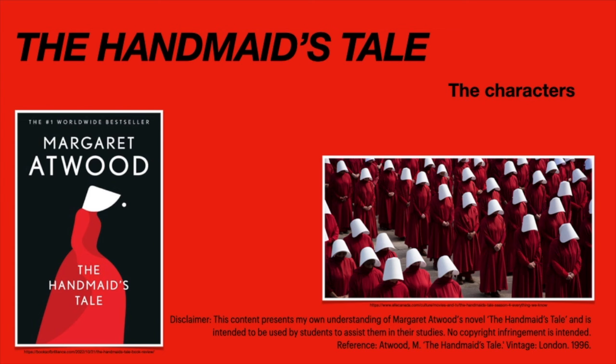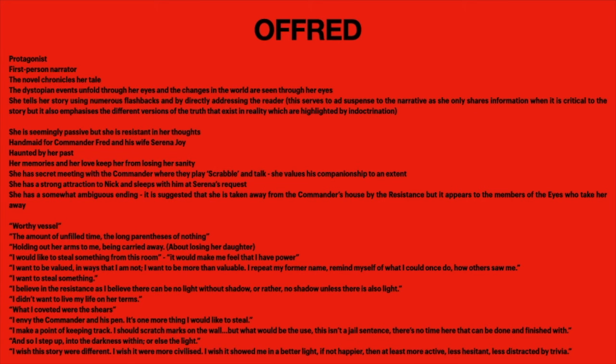Our first character is obviously Offred — she's our protagonist. We are hearing the story from her perspective, so she's the first-person narrator. The dystopian events unfold through her eyes; she tells her story using numerous flashbacks and by directly addressing the reader, which creates suspense but also a sort of fractured reality. Offred is seemingly passive, but she's quite resistant in her thoughts. The big question with Offred is whether she is a resistor or an enabler of the society.